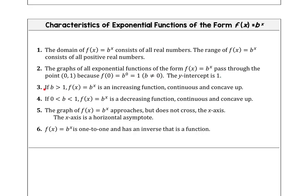If b is greater than 1, we have an increasing function that's continuous and concave up — exponential growth. If we have a b value that is a fraction between 0 and 1, we have a decreasing function that's continuous and concave up — exponential decay. We know that the graph of an exponential function approaches but doesn't cross the x-axis, and we call the x-axis a horizontal asymptote.